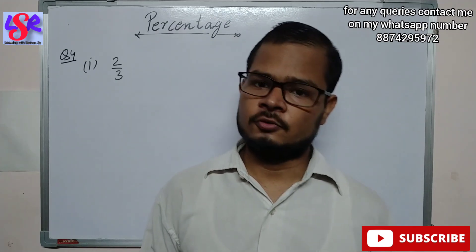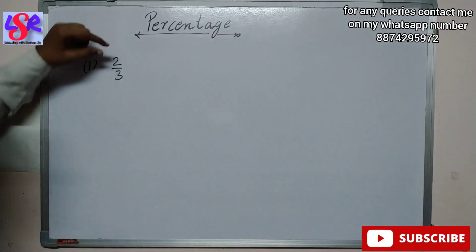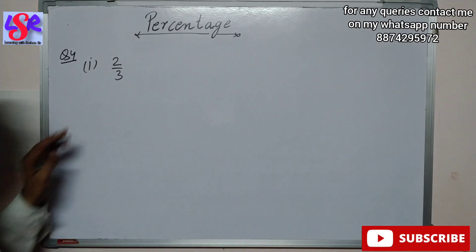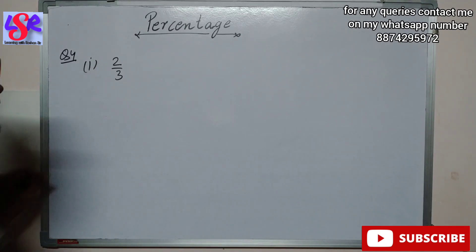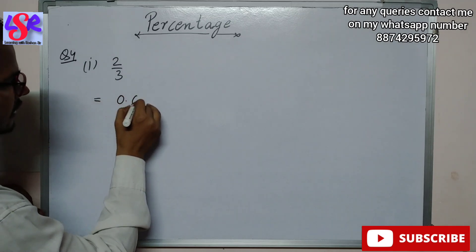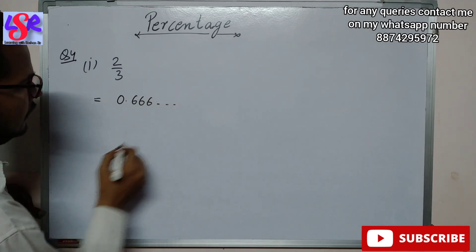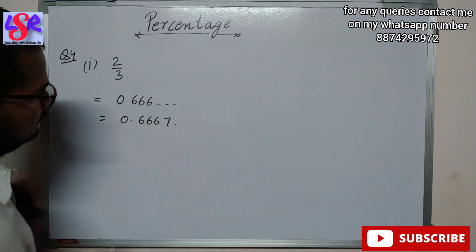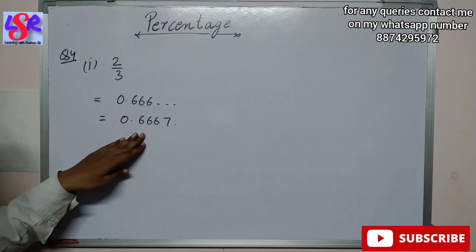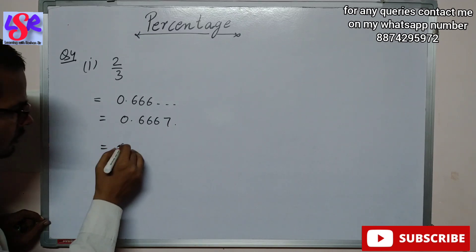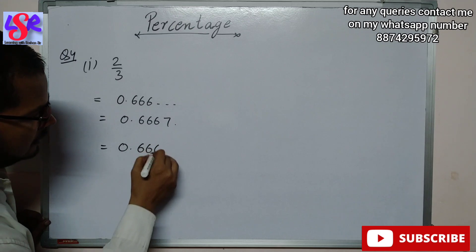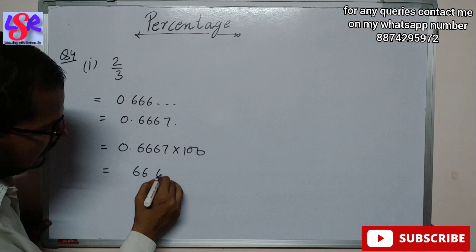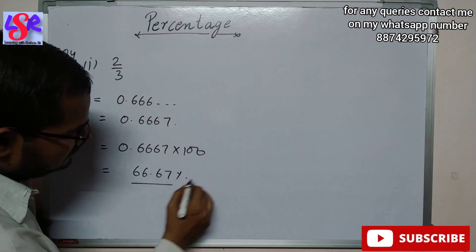Now we have Question 4. Here we are given the fraction 2 upon 3 and we have to convert it into decimal. Dividing 2 by 3, we get 0.666... which can be rounded off to 0.6667. Then to convert into percentage, we multiply by 100, giving 66.67% as the answer.